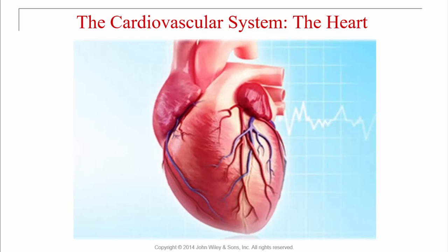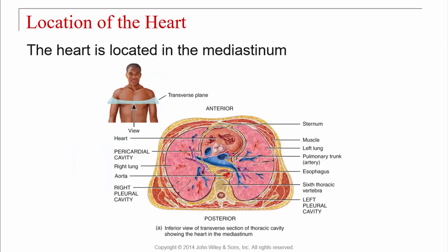In this lecture we're going to look at the heart. The heart is located in an area of the chest called the mediastinum. There's quite a bit going on in the mediastinum. You're going to find major blood vessels such as the aorta, the vena cava, the esophagus, and some bronchial tubes depending on where you slice in the mediastinum. There is a lot going on in a very small space.